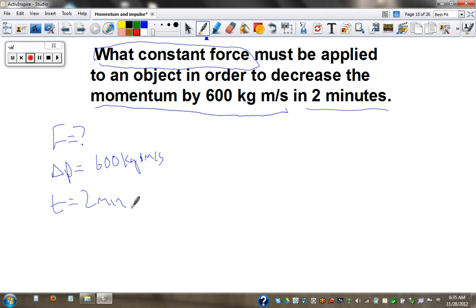However, check this out. Momentum is in kilogram meters per second, so time must also be in seconds. So two minutes times 60 is 120 seconds. Now I'm ready to solve.